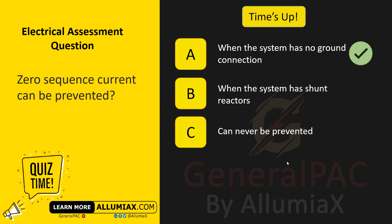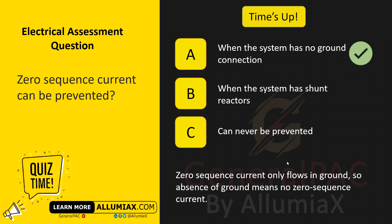The answer is A — when the system has no ground connection. Zero-sequence current only flows in the ground, so the absence of a ground connection means no zero-sequence current.